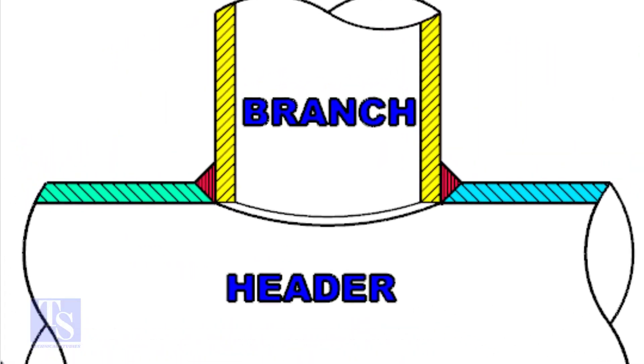Look at the stub-in joint. The bevel is prepared on the header, and the branch pipe is in the header.